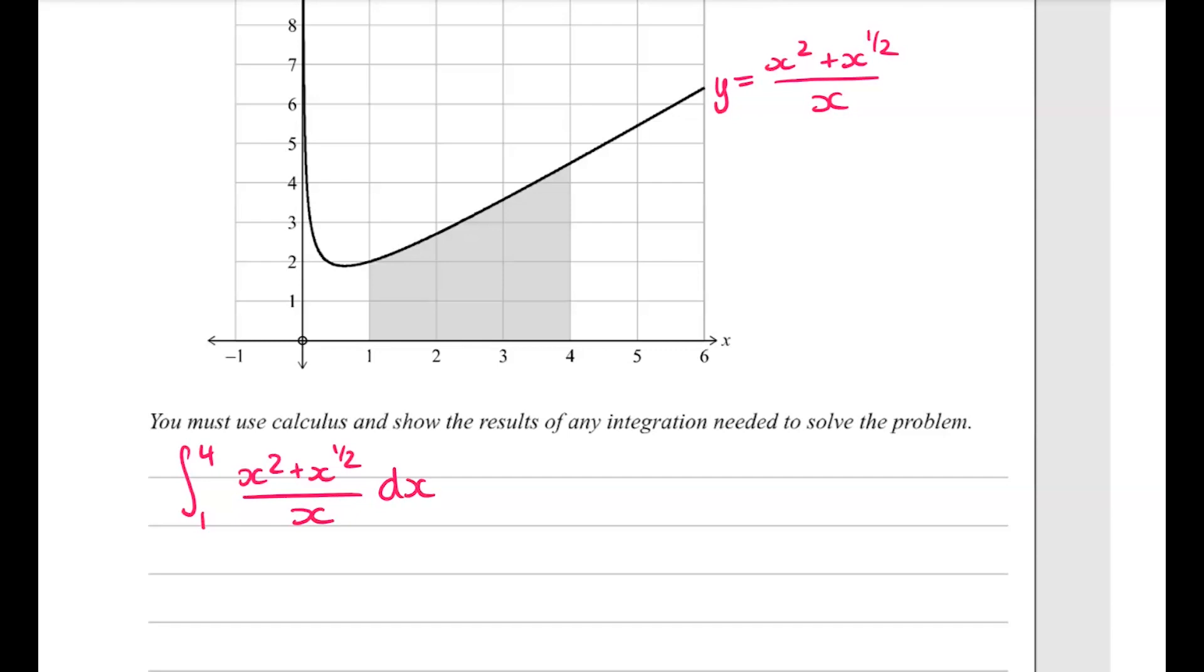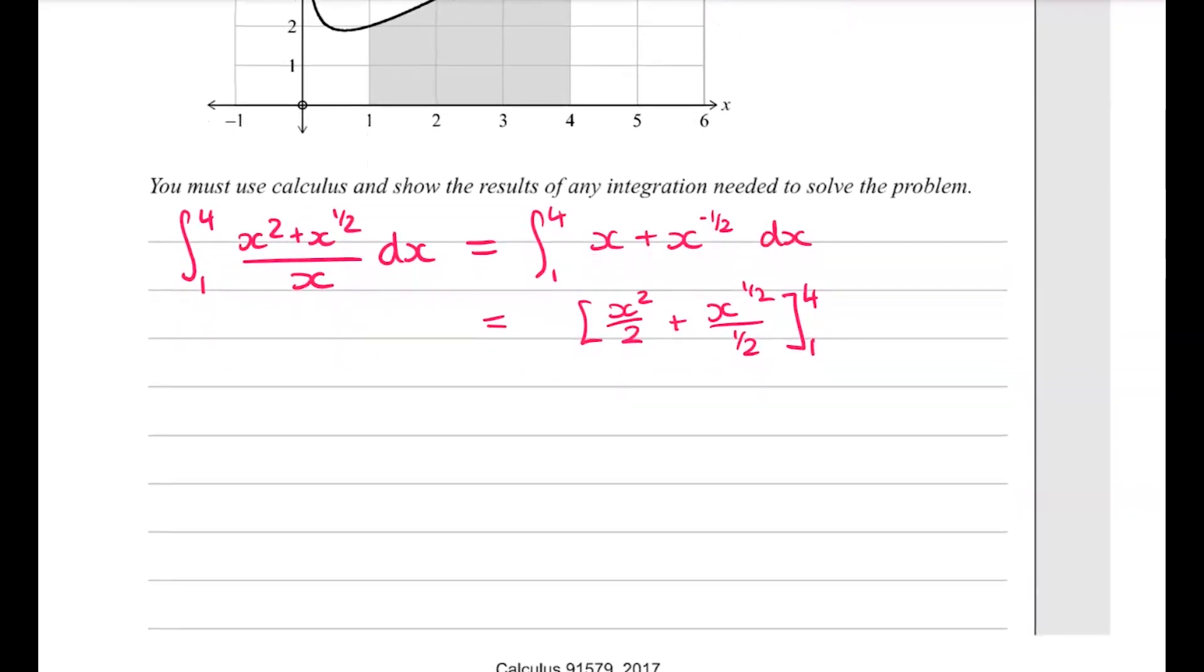First of all, we're going to simplify that. And then we integrate it. Raise the power by 1, divide by new power. And then substitute in values, giving us the final answer of 9.5 units squared.